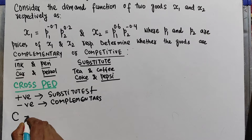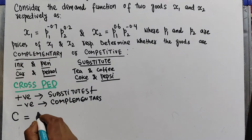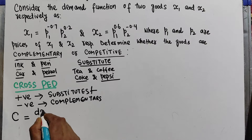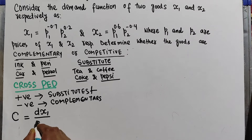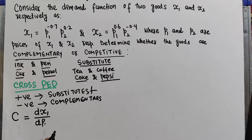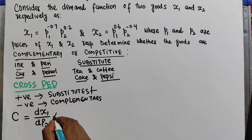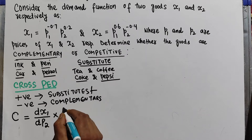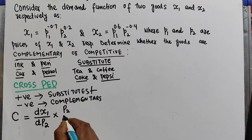The cross-price elasticity of demand for good x1 is given by the change in demand for good x1 due to the change in the price of good x2, times p2, divided by x1. We use partial derivatives here.